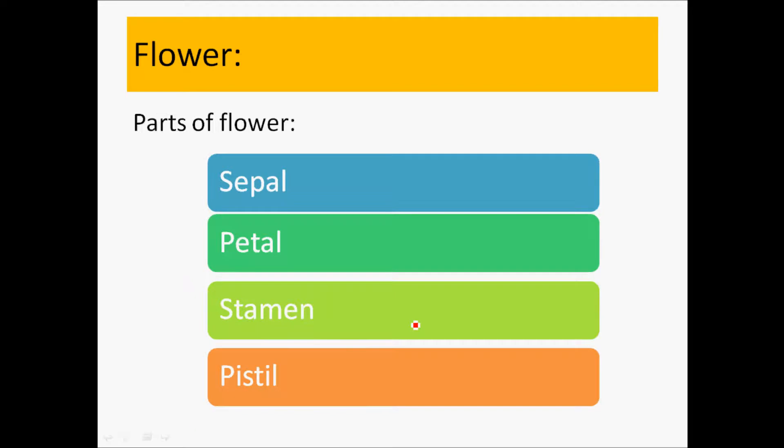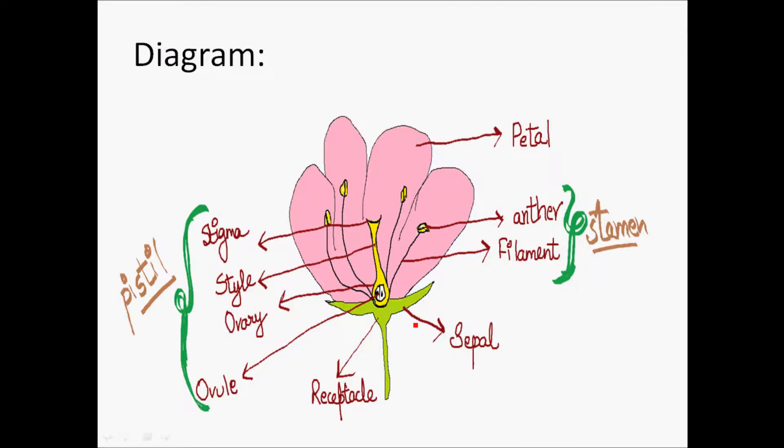Now moving on to the next thing, flower. Flower is basically classified into 4 categories: Sepal, petal, stamen and pistil. Let's have an idea with the help of a diagram.